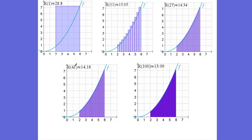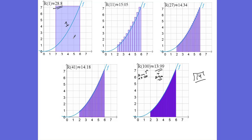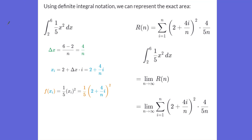Here you can see I'm changing the number of rectangles. With 1 rectangle the area is 28.8. With 11, 27, 41, and 100 rectangles, you can see what happens as the number of rectangles increases towards infinity. As we take the limit, we're reaching the exact area — getting closer and closer to 14. That area is approximately 13.99, and that is the definition of a definite integral.